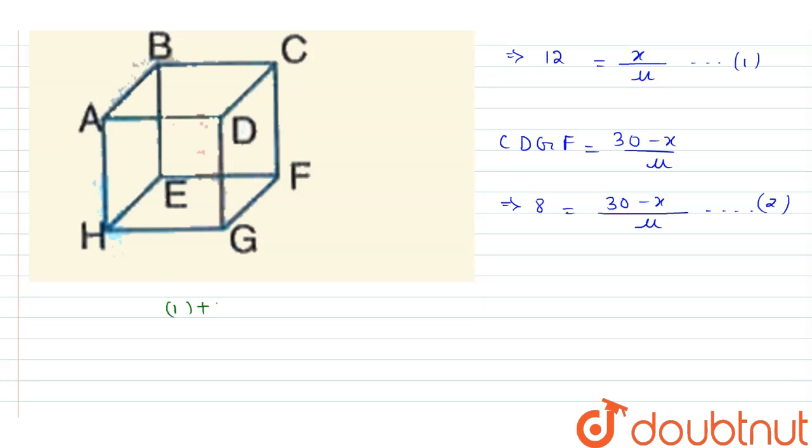Adding equations 1 and 2, we get X by mu plus 30 minus X by mu equals 12 plus 8, which is 20. Therefore, mu equals 30 by 20, which equals 1.5.